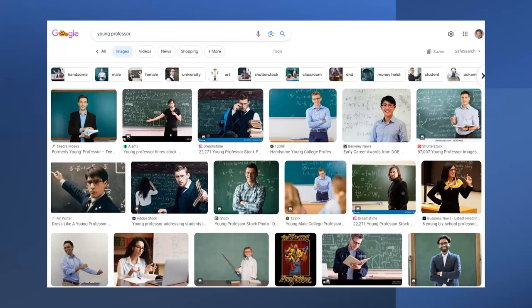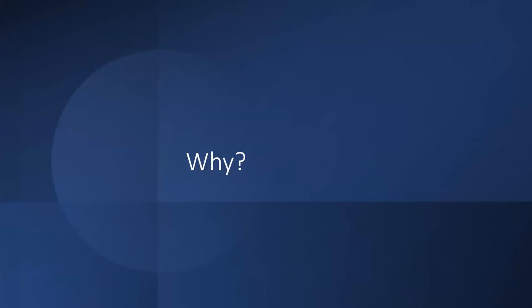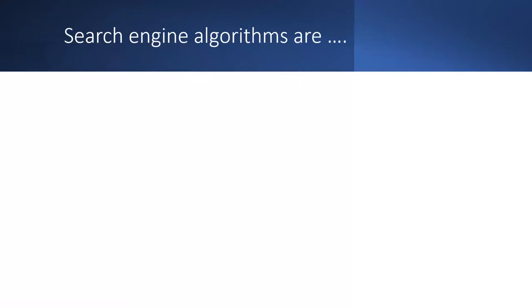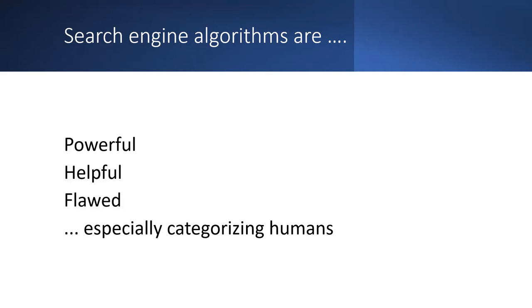So the question I want to talk through with you today is: why? Why is it that when you are doing these searches, especially around people, you get the kinds of results like what I just showed? One thing that's important to keep in mind is that the algorithms that drive search engines are very powerful and pretty helpful, but they are also flawed — especially when it comes to categorizing humans.